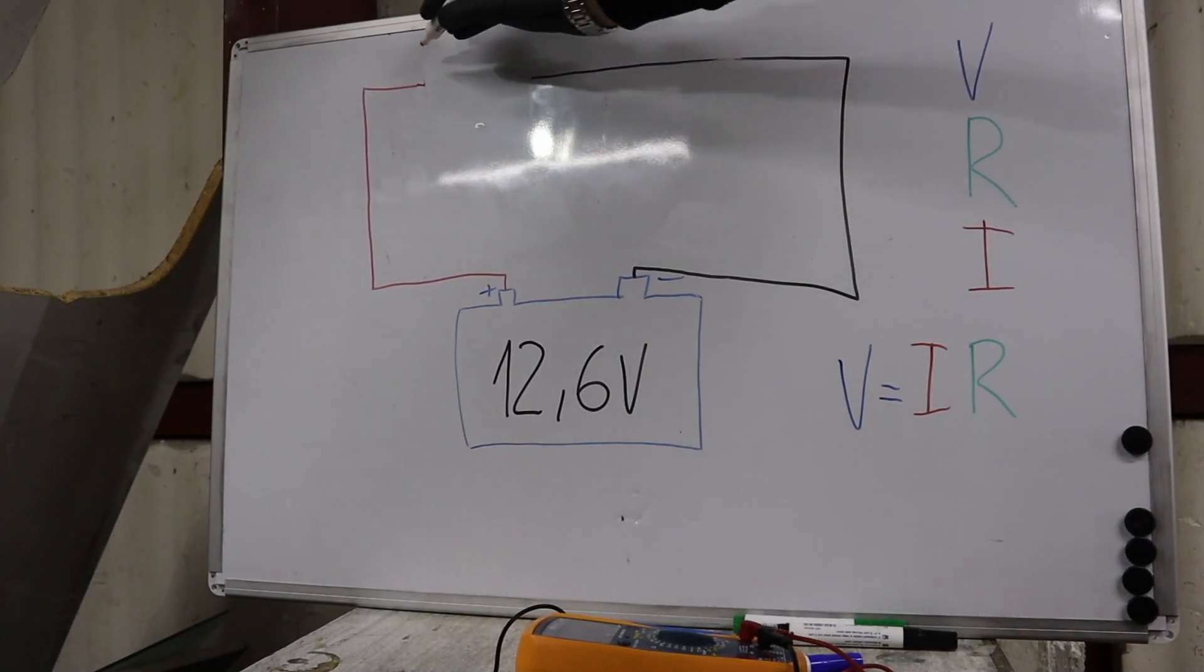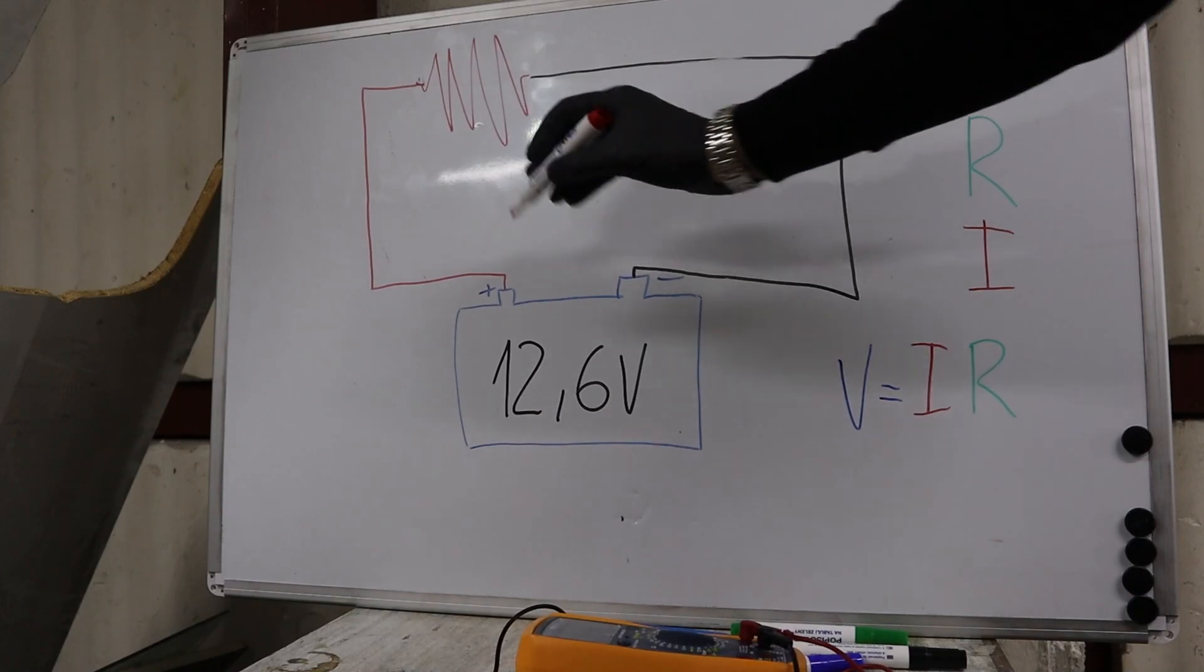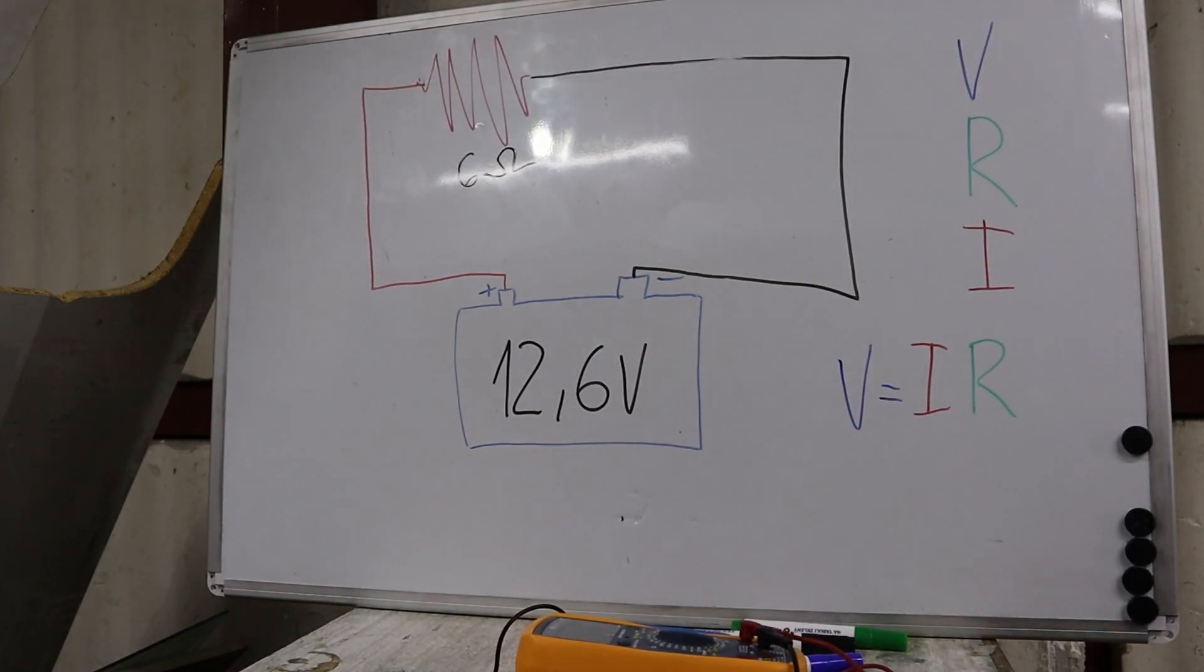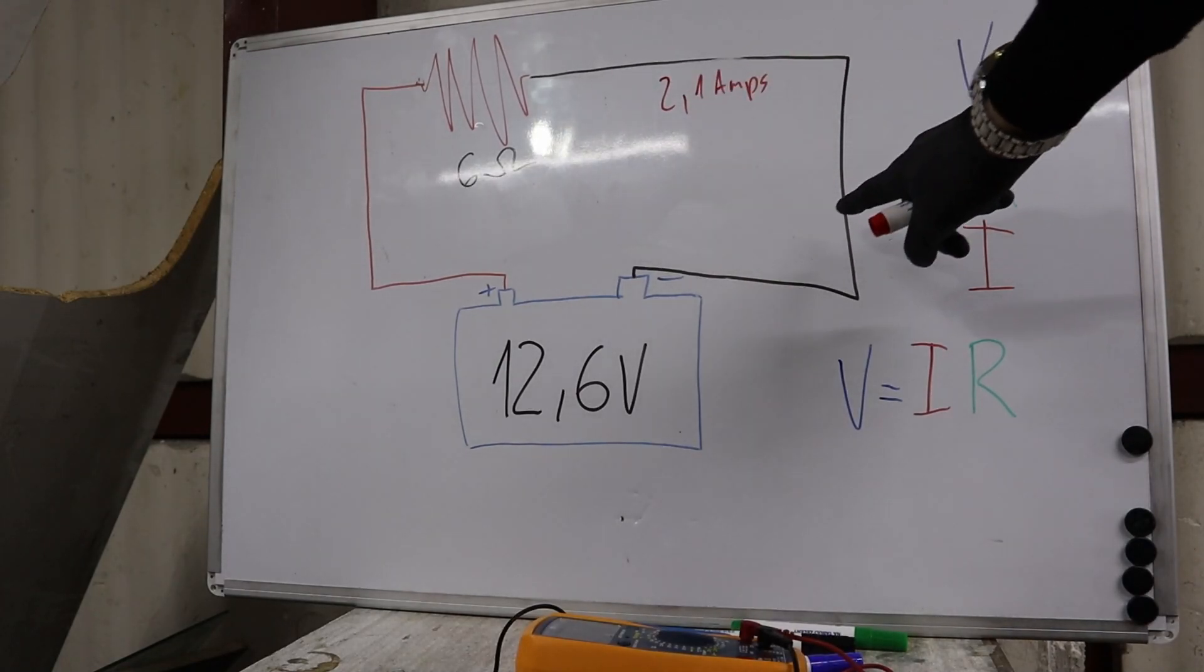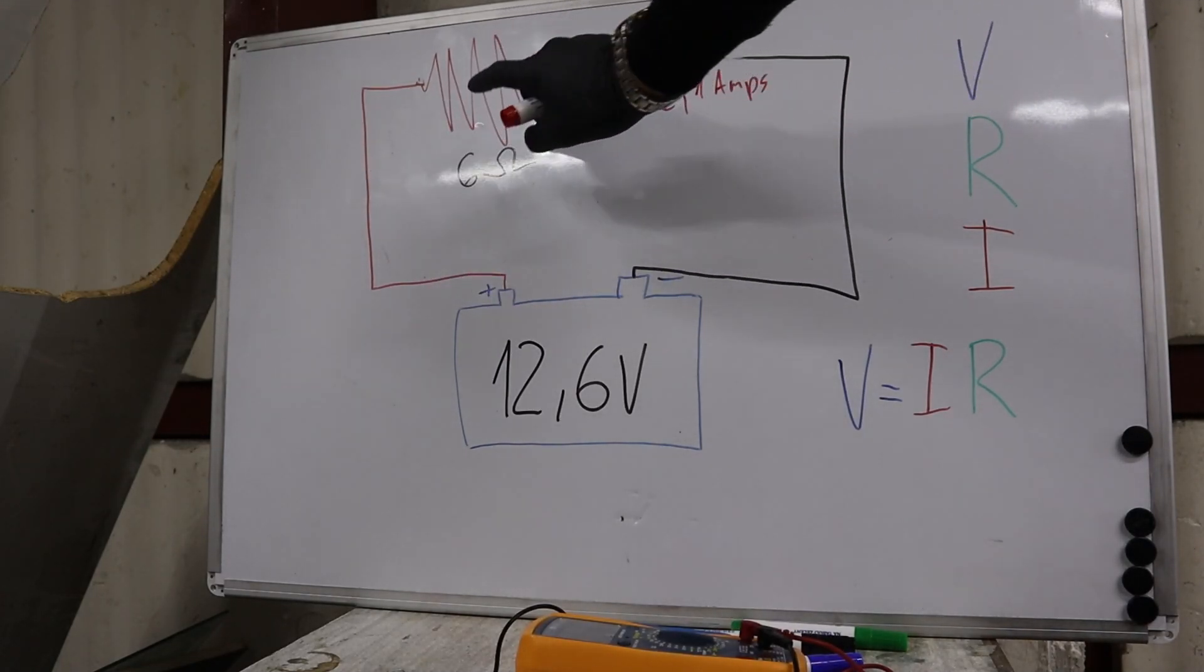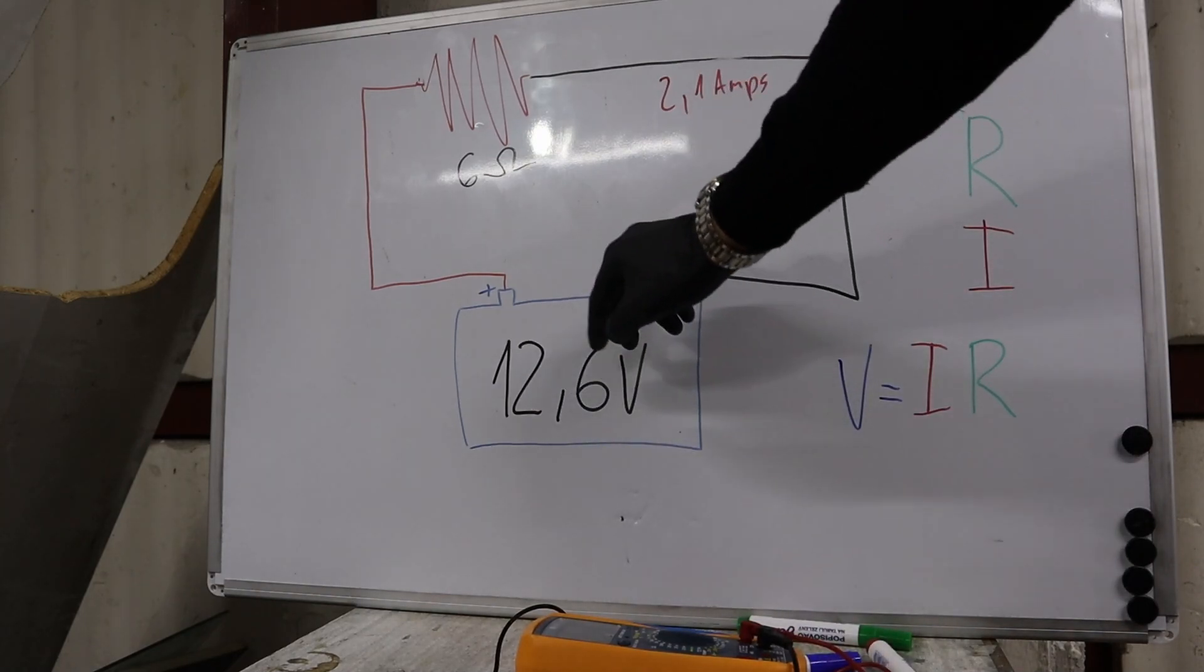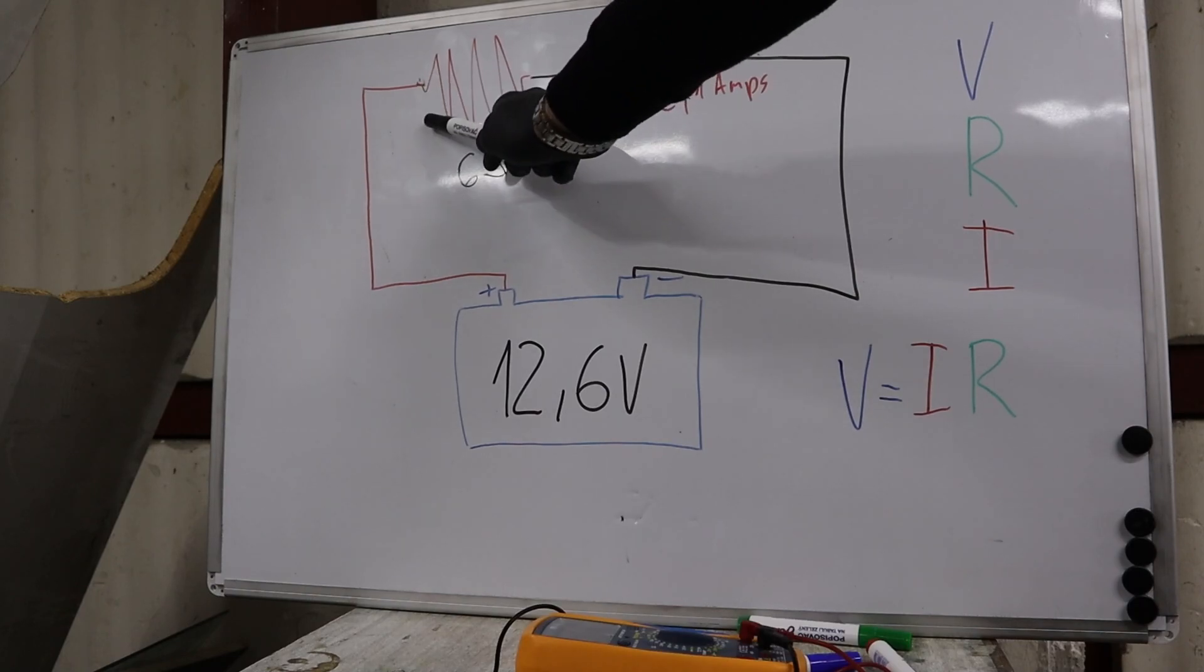Let's connect our basic circuit. First, I want to show you how voltage works. Let's say we have resistance of 6 ohms like in our first example. We have 2.1 amps, and this current is exactly the same in all parts of the circuit, but it is not the same for voltage.